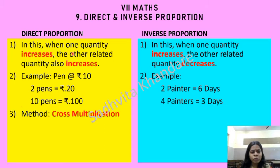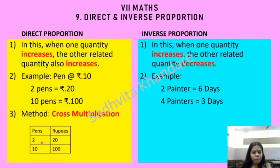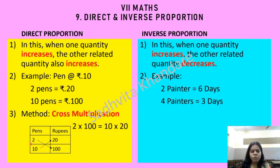For direct proportion we use the cross multiplication method. We make a table: 2 pens cost 20 rupees, 10 pens cost 100 rupees. We cross multiply: 2 into 100 is 200, and 10 into 20 is also 200. When you cross multiply, both sides should give the same answer.